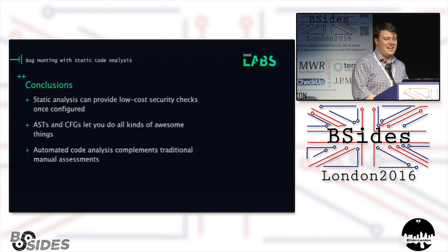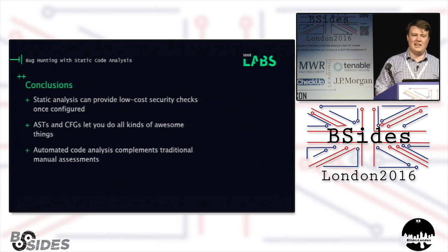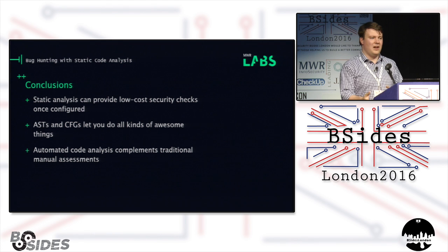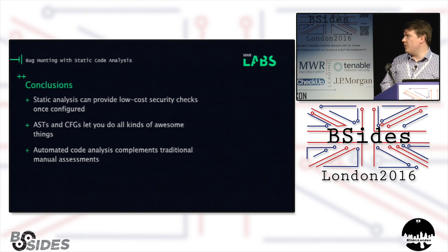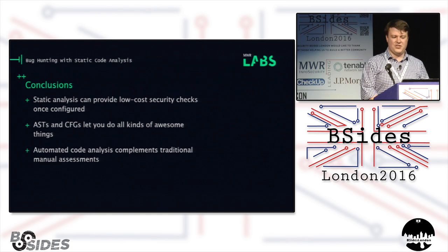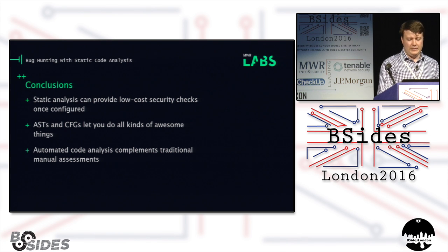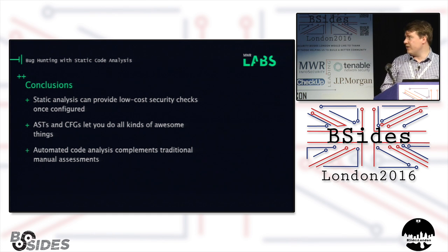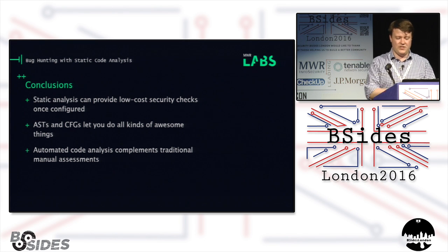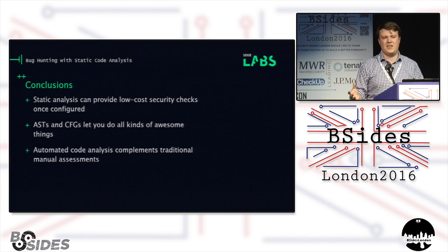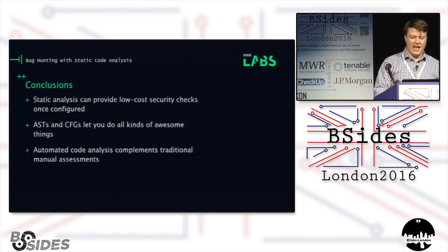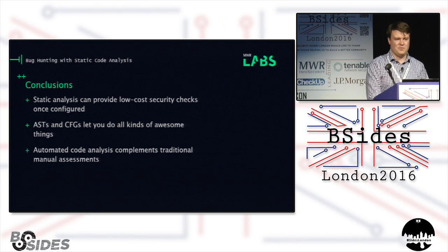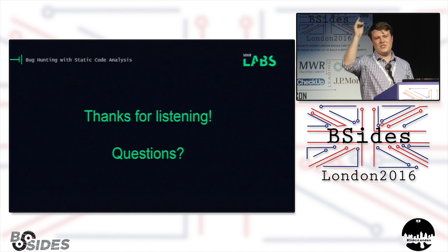In conclusion: static analysis overall can provide a lot of low-cost security checking for comparatively little effort for developers, and as a security consultant it will allow you to find some classes of bugs quickly at the start of an engagement, or if you're bounty hunting it helps both identify targets and know where to look once you get there. If you're building your own tooling, while regular expressions and bash scripts will catch some things, building abstract syntax trees and control flow graphs gives you far more analytical power. At the end of the day, all of these automated analysis techniques complement traditional manual assessments — you're not going to be replacing pen testers with this any time soon.